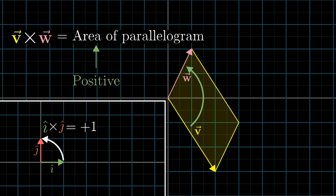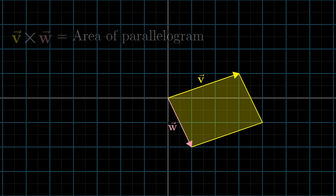So, for example, with the vectors shown here, I'll just tell you that the area of that parallelogram is 7. And since v is on the left of w, the cross product should be negative, so v cross w is negative 7.